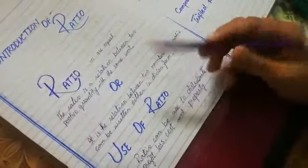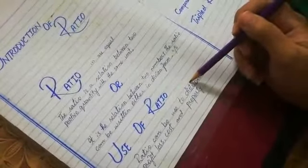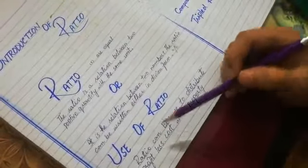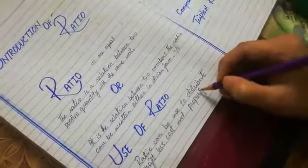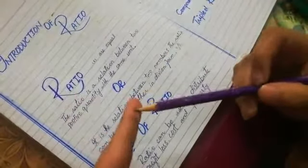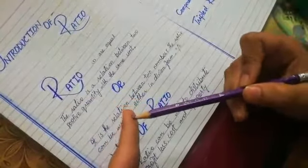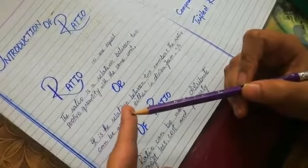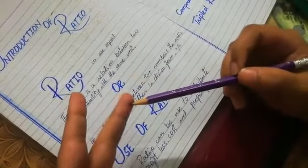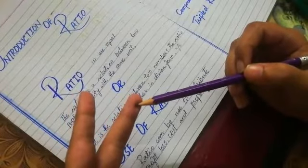Now Uses of Ratio. Ratio can be used to distribute profit, loss, cost and their property. Now we are talking about profit. Profit is in partnership or joint venture. You will distribute the profit. It will also be in partnership or joint venture.